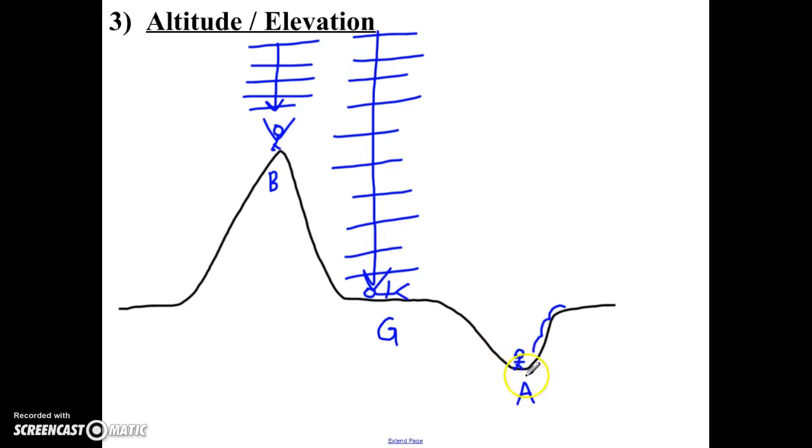Now, Abby is the farthest down. She's at the lowest elevation. So she actually has the most air above her pushing down on her. So Abby is under the most pressure. So the relationship here is that as altitude goes up, the higher you are, the lower the density, the lower the pressure.